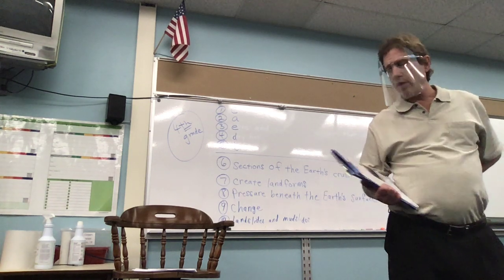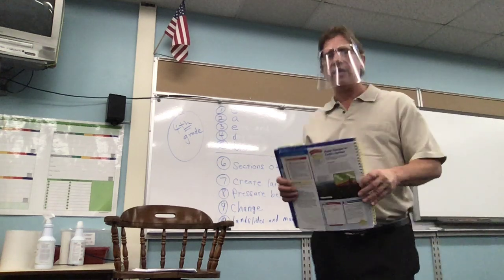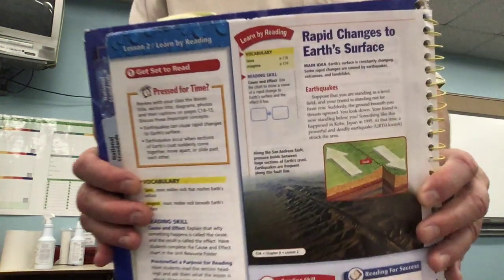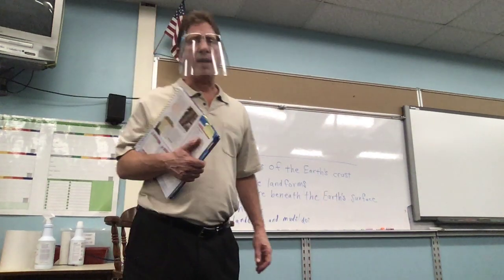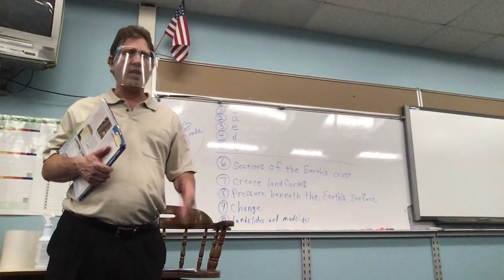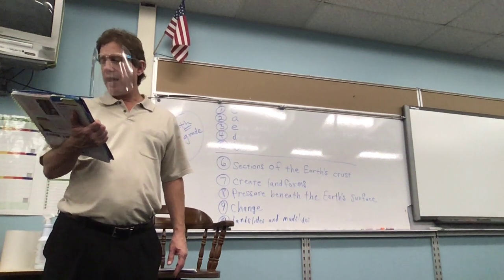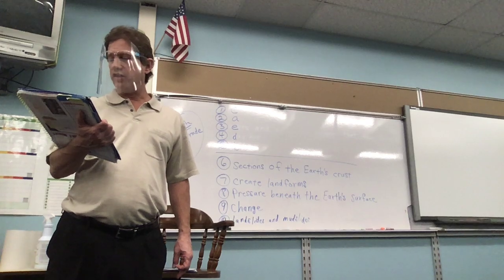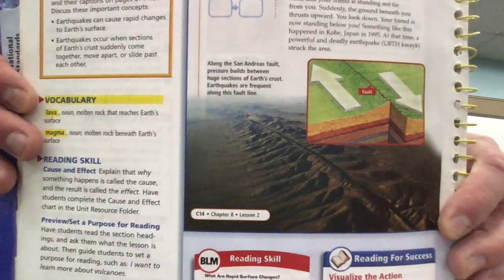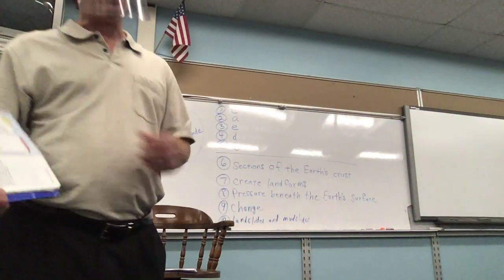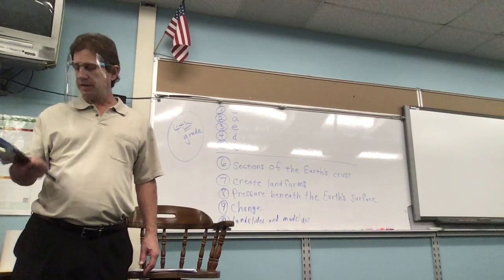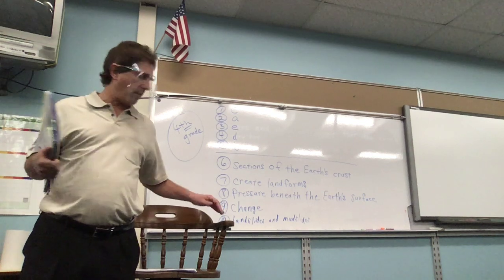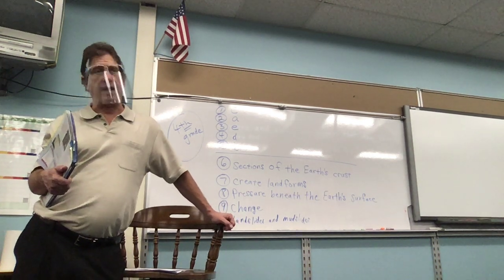We have a quiz tomorrow and it's based on rapid changes to the earth's surface. This is in our book and it begins on page C14. We talk about fault lines, how they move back and forth — that would be a sliding boundary. The San Andreas fault is shown in this picture. If you went to California you could actually walk alongside this fault. That's why we have a lot of earthquakes in California, because there's a fault line there.